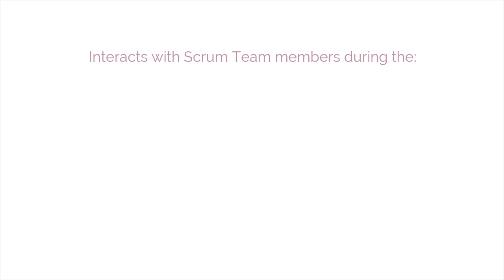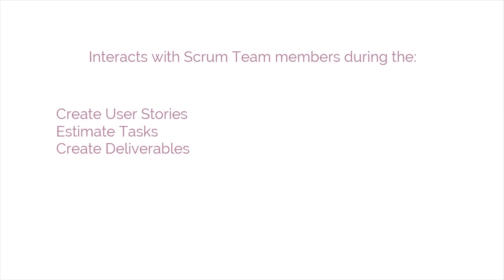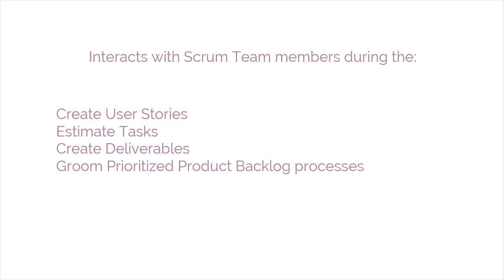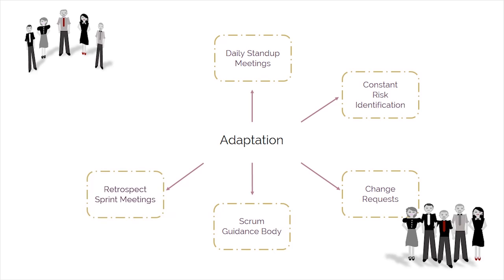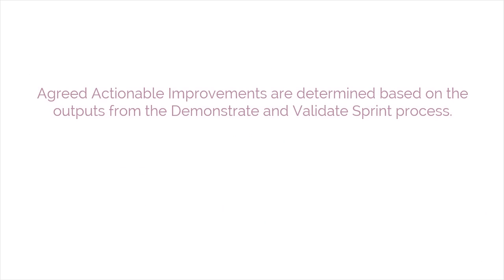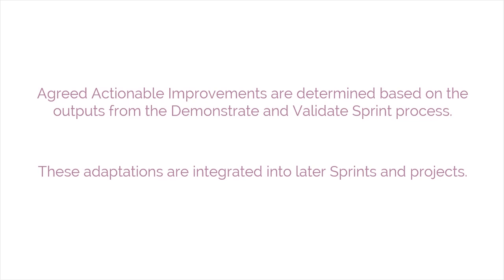The Scrum Guidance Body interacts with Scrum team members during the Create User Stories, Estimate Tasks, Create Deliverables, and Groom Prioritized Product Backlog processes to offer guidance and provide expertise as required for the team to adapt to necessary changes and challenges. In the Retrospect Sprint process, agreed actionable improvements are determined based on the outputs from the Demonstrate and Validate Sprint process. These adaptations are integrated into later sprints and projects.